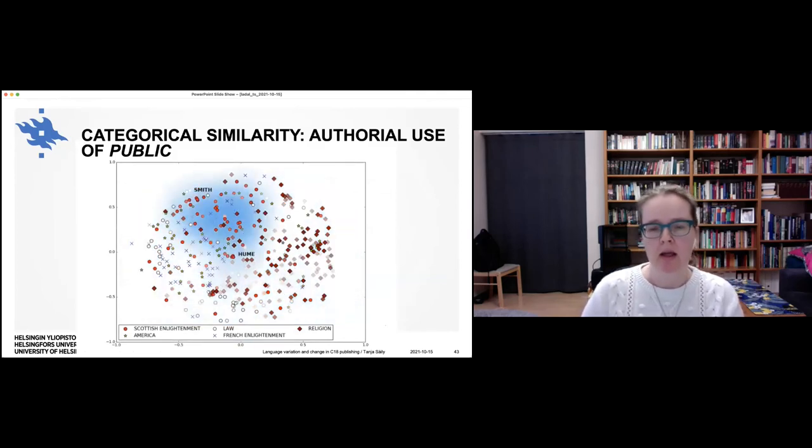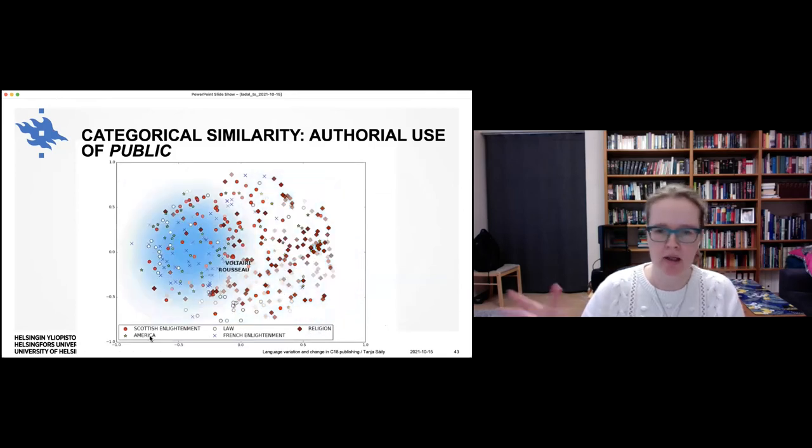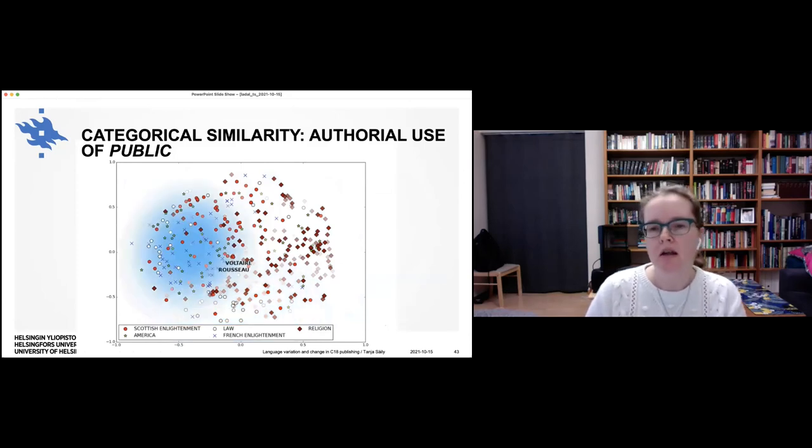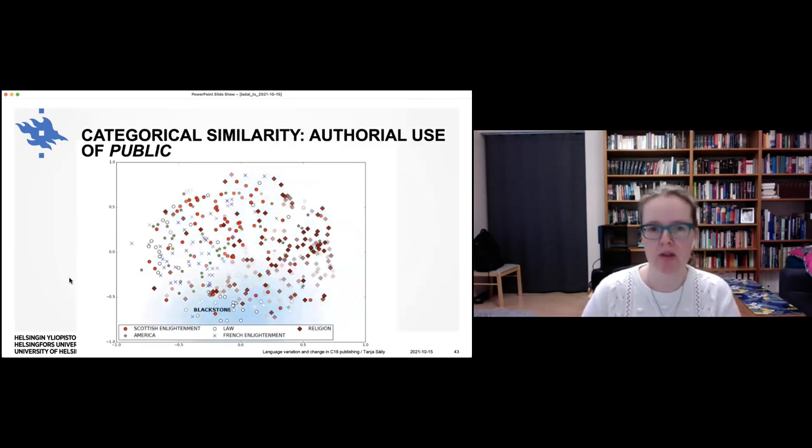Then we come to the authorial use of public. And this is something that I'm really interested in. So the authors have been here classified into some groups. So there's like Scottish Enlightenment, French Enlightenment. Then there's like topics like law and religion. So what they wrote about. And then there's generally like American writers. And we can see here in this space how their use of public clusters or not. So what we can see is that the religious authors cluster quite neatly here on the right. And so the legal ones kind of sort of as well here towards the bottom and maybe left. And then the French and Scottish Enlightenment may be a bit more mixed, but still they are discernible. So writers like Rousseau and then Smith and Hume in the Scottish Enlightenment. But then American writers, I mean, obviously that has been too wide a category because they are all over the place. So they probably wrote in very different ways. And the fact that they were American doesn't explain their use of public.